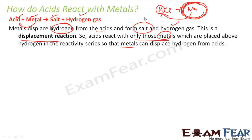It is a fight between sodium and hydrogen to get chlorine. Hydrogen wants chlorine, sodium wants chlorine, but sodium is more powerful. So sodium will take chlorine, hydrogen will come out. We can say that HCl is an acid because it gave the hydrogen ion.